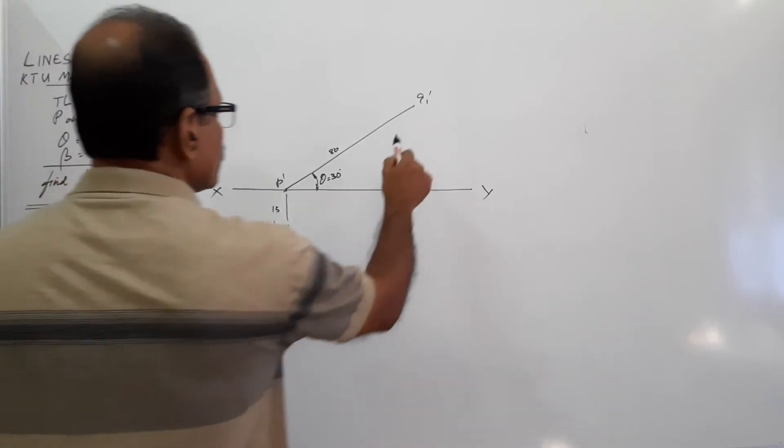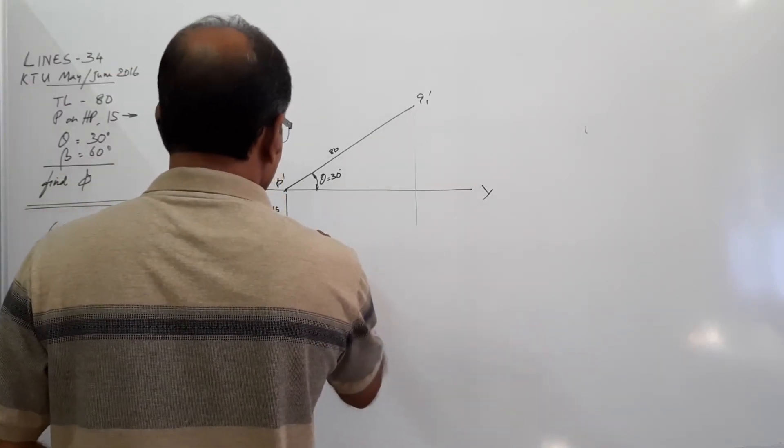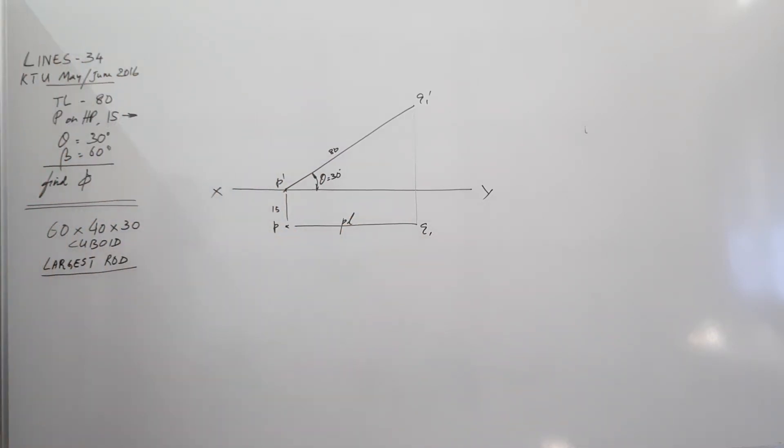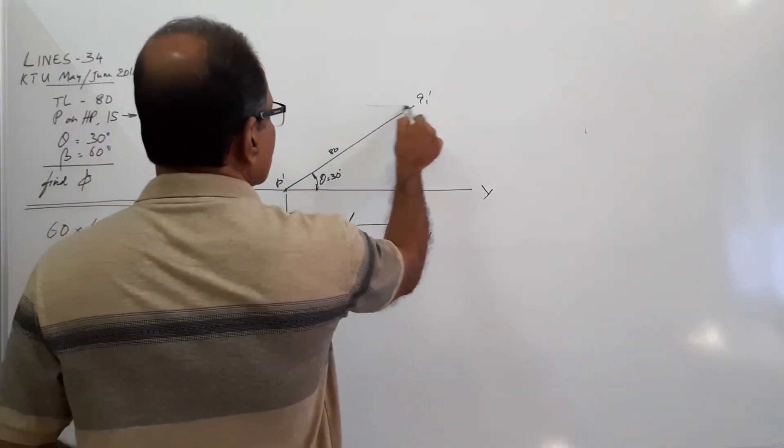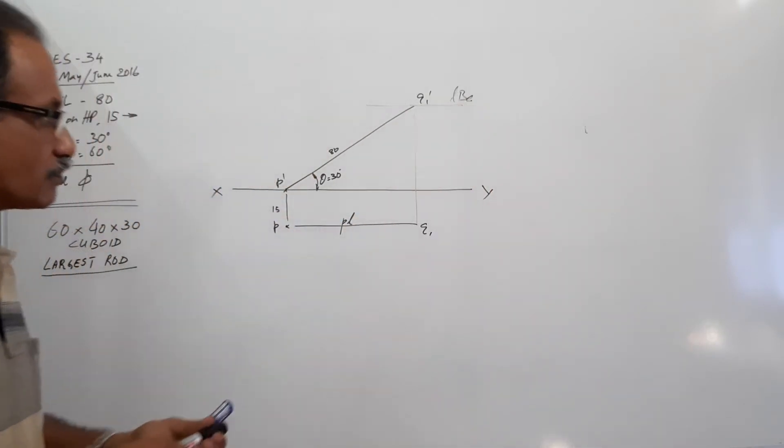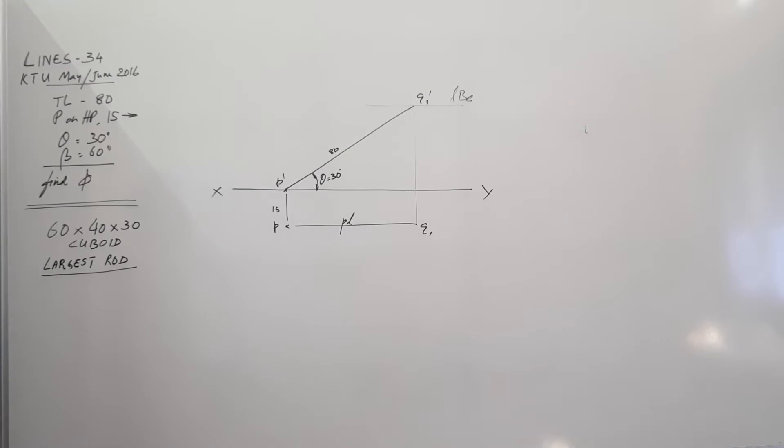Drop it down. Make it parallel to XY, Q1. This is called the plan line. And there is a locus through Q1 dash, which you call as locus of B in elevation. Agreed?